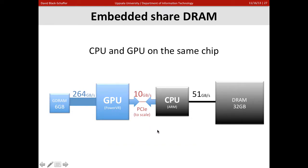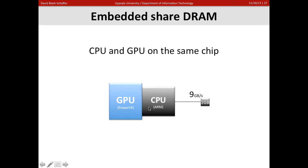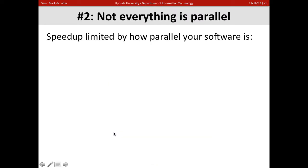Embedded GPUs get around this by sharing DRAM directly. In an embedded device, the CPU and GPU are placed together on the same chip. For example, an iPhone has one gigabyte of memory at nine gigabytes per second, shared between the CPU and GPU. Here's Apple's A6 processor — the CPU cores and GPU cores sit on the same die, sharing the same memory access, so they can share data much more quickly and easily.